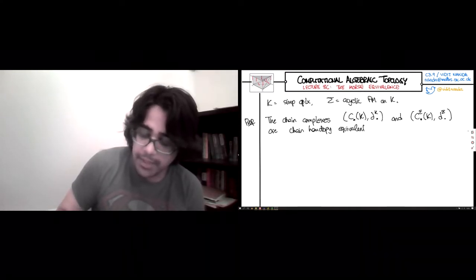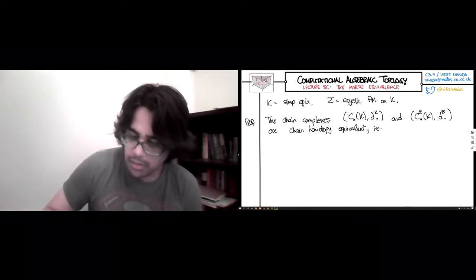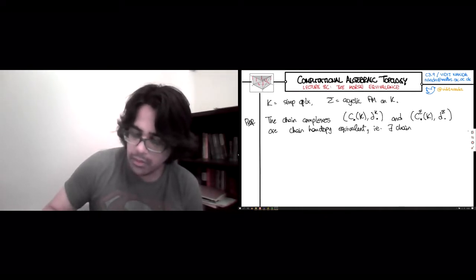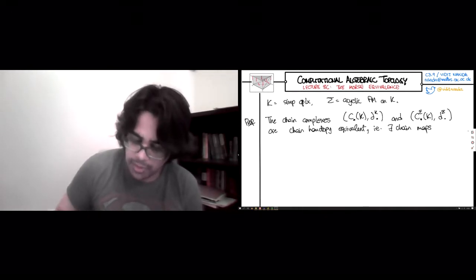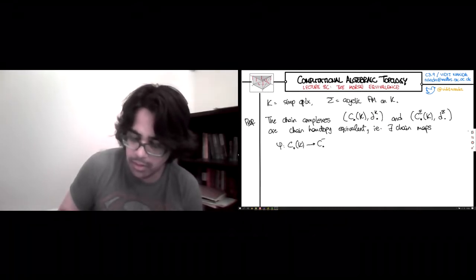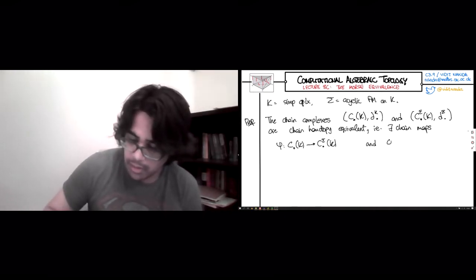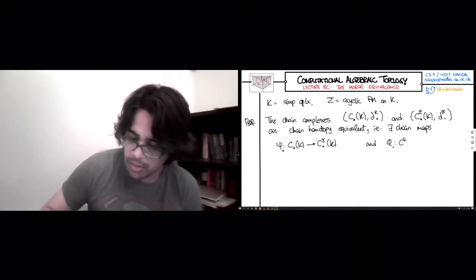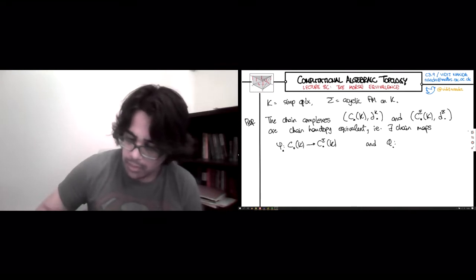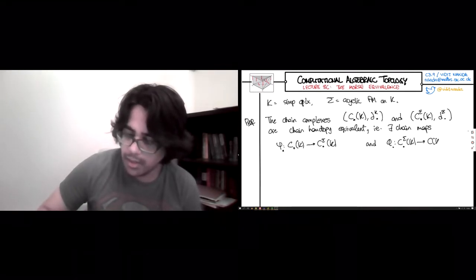So what that means is that there exists chain maps. I'll call the first one psi, and this is going to take us from the big complex down to the small one. And I'll call the second one phi, which is going to take us from the small one to the big one, C sigma to C K.